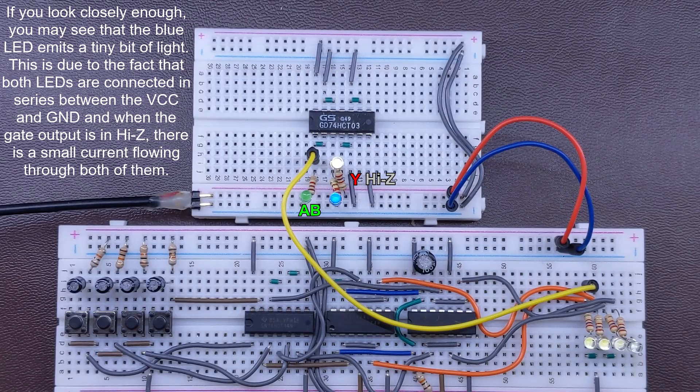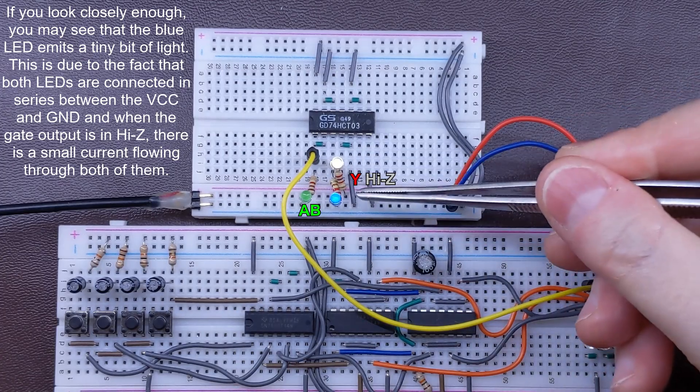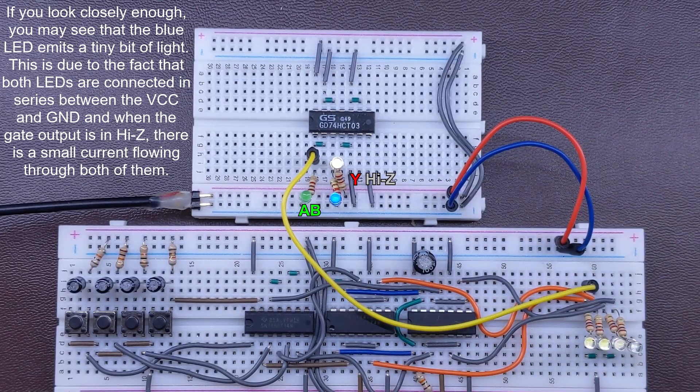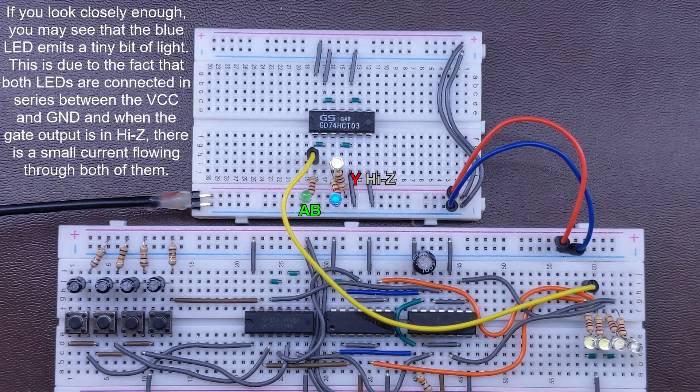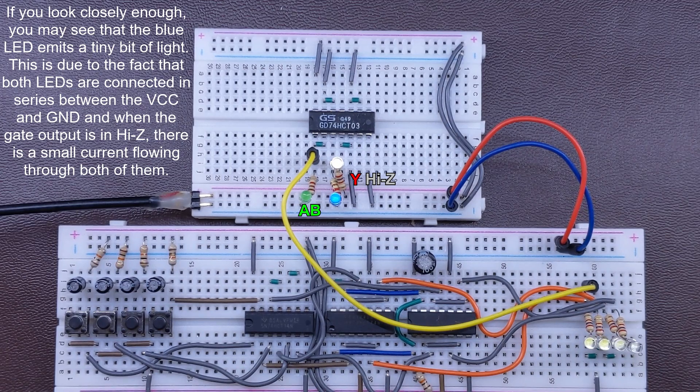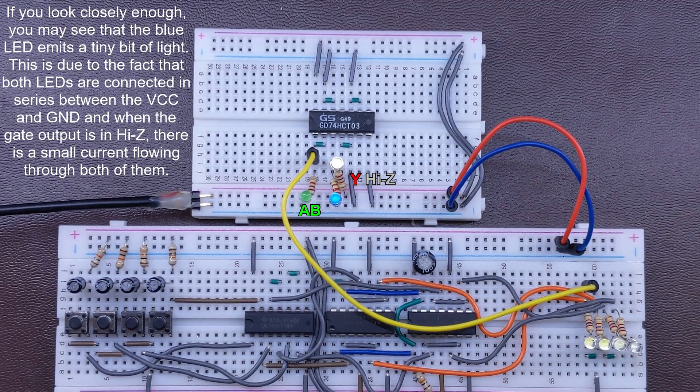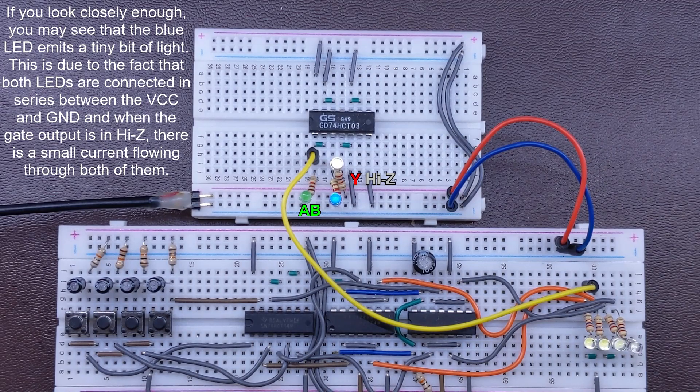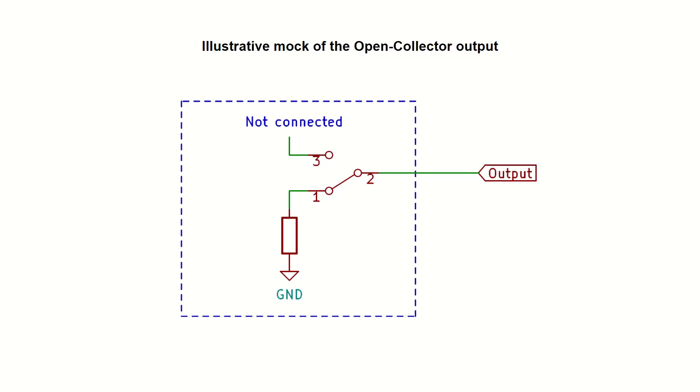so it looks like it's neither 0 nor 1 on the output. It is in fact logical 1 on the output, but this version of the gate doesn't drive the output with the VCC for the logical 1. This kind of output is called the open collector. It pulls the output to the ground for logical 0, but for the logical 1 it's not driven from the VCC. Instead, it behaves like disconnected, hence another name, high impedance or high Z for short.